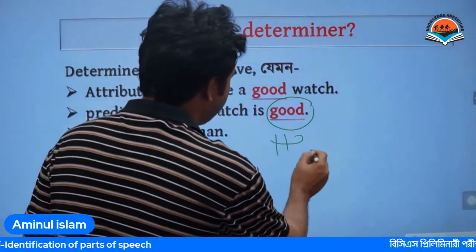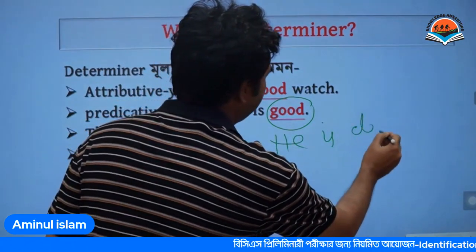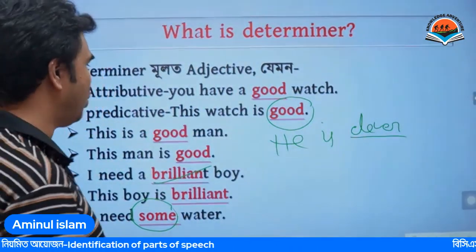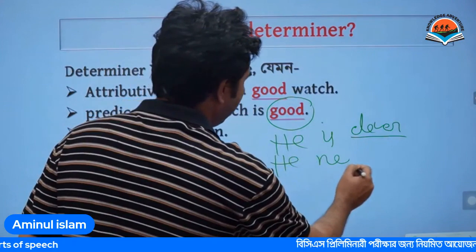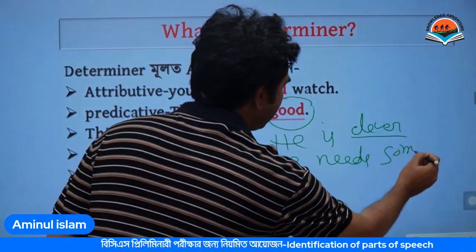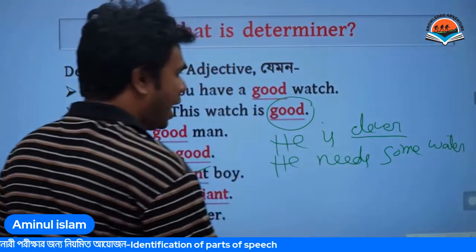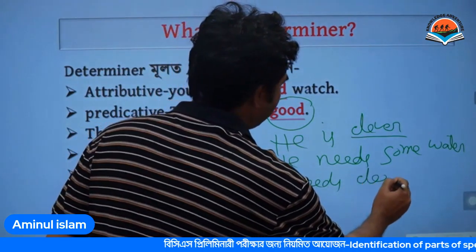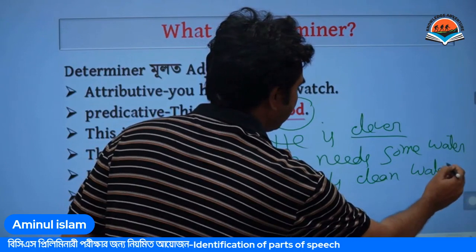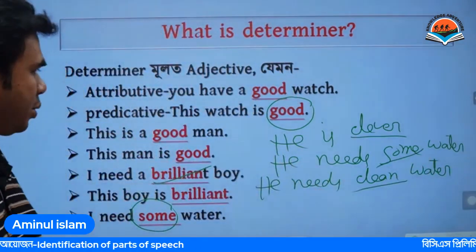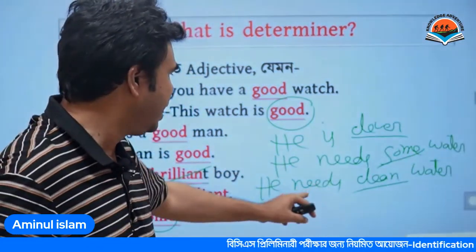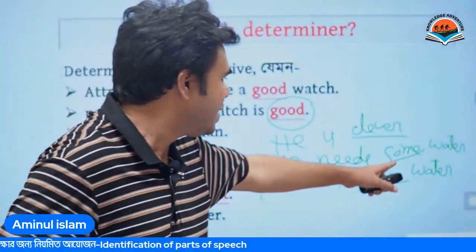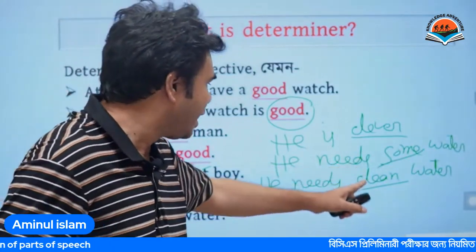He is clever. He needs some water. He needs clean water. He needs some water. He needs clean water. So, for determining, some is adjective-determiner, and clean is adjective-determiner.